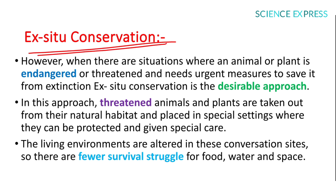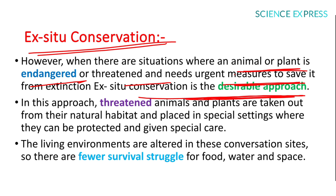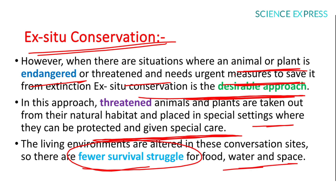Ex-situ conservation means off-site conservation. When an animal or plant is endangered and needs urgent measures to save it from extinction, ex-situ conservation is the desirable approach. Threatened animals and plants are taken out of their natural habitat and placed in a special setting where they can be protected and given special care. The living environment is altered so there are fewer survival struggles for food, water, and space.